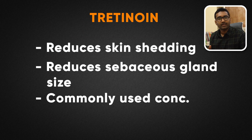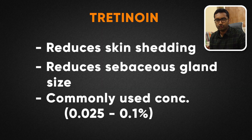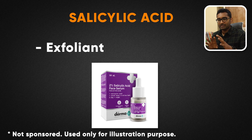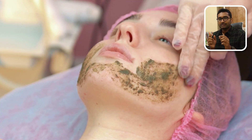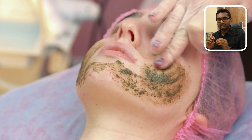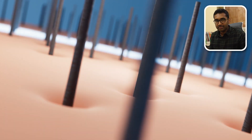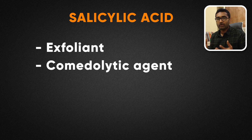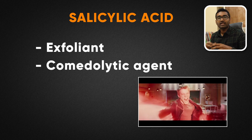The third ingredient is salicylic acid, which is basically an exfoliant. When applied to the skin, it dissolves the connections between skin cells. Therefore, the skin is easier to peel and excess skin cells are reduced. This helps prevent the keratinous plug from forming and keeps the follicle clear.